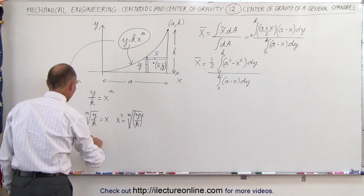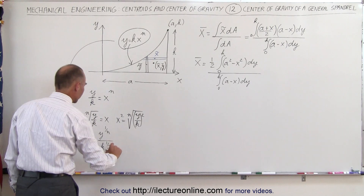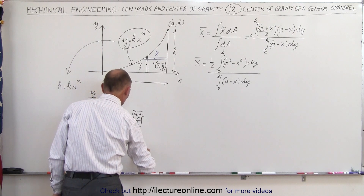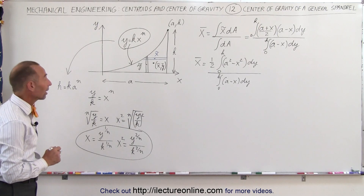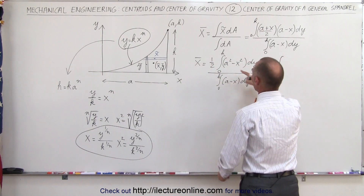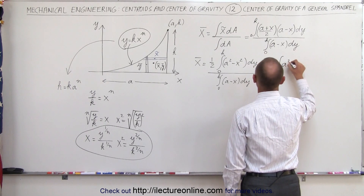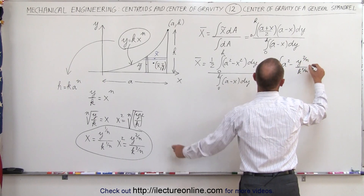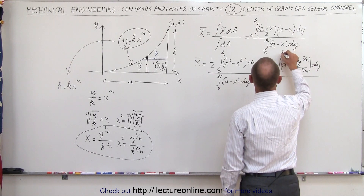A better way to write it: x equals y to the 1/n power divided by k to the 1/n power, and x² can be written as y to the 2/n power divided by k to the 2/n power. We'll use these substitutions in our integral to integrate in the y-direction. This becomes 1/2 times the integral of a² minus x², where x² is replaced by y to the 2/n power divided by k to the 2/n power, times dy, with limits from 0 to h.